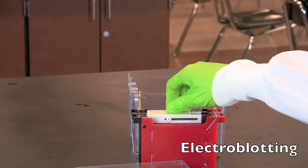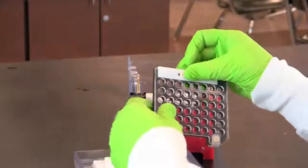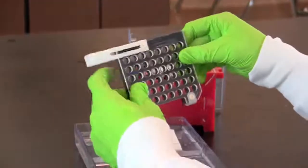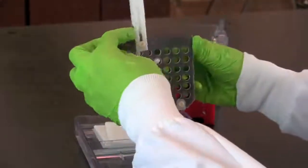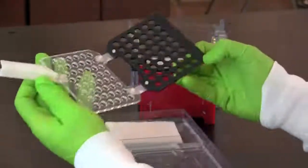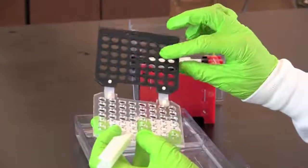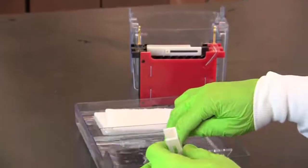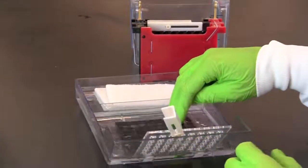To make a blotting sandwich, obtain a container large enough to fit the gel holder and add enough blotting buffer until the container is filled approximately one centimeter deep. Place the gel holder cassette in the container with the black side down and immersed in the buffer and the white side up and out of the buffer.